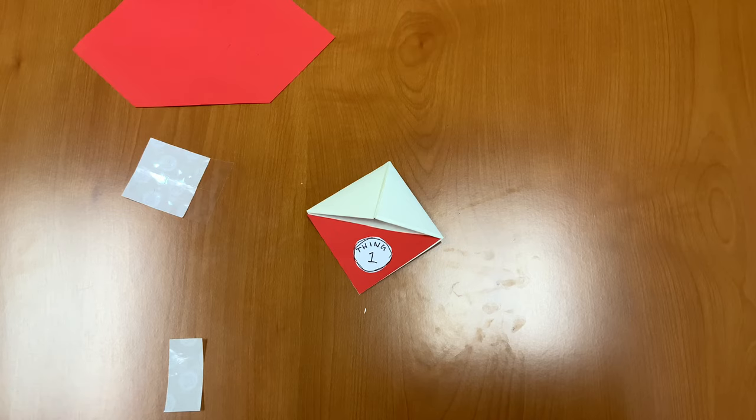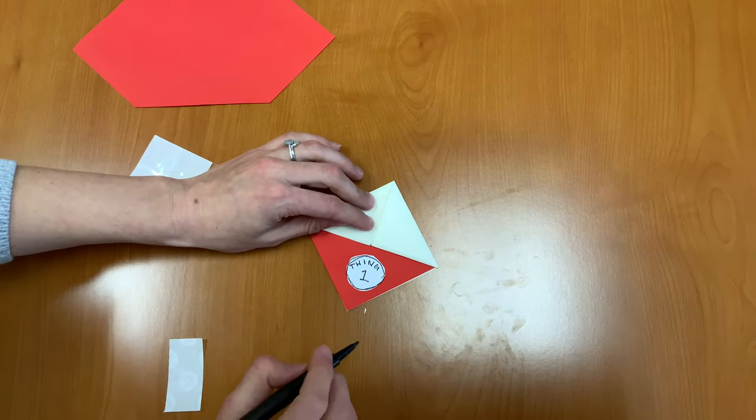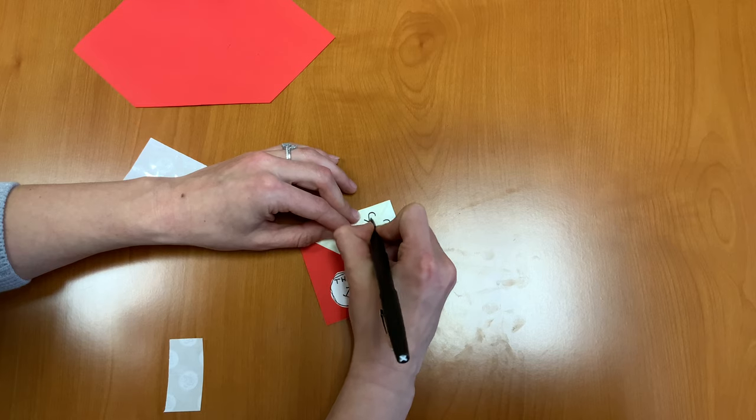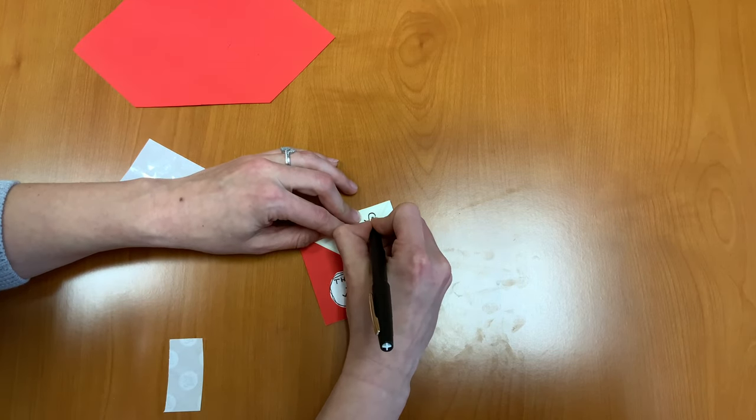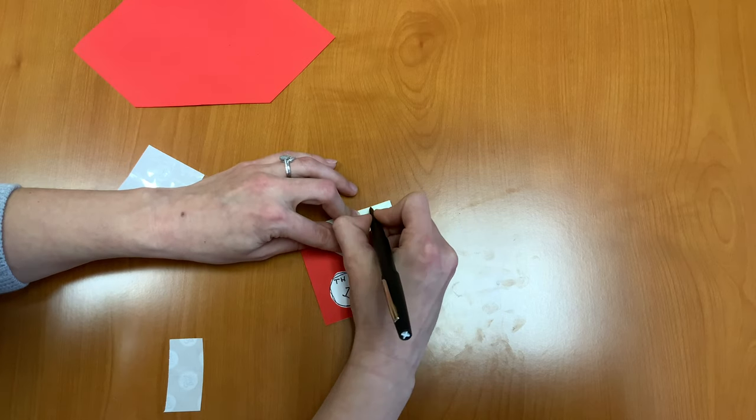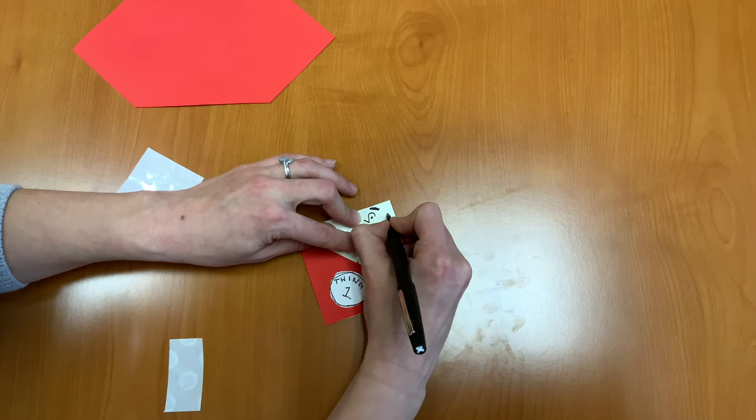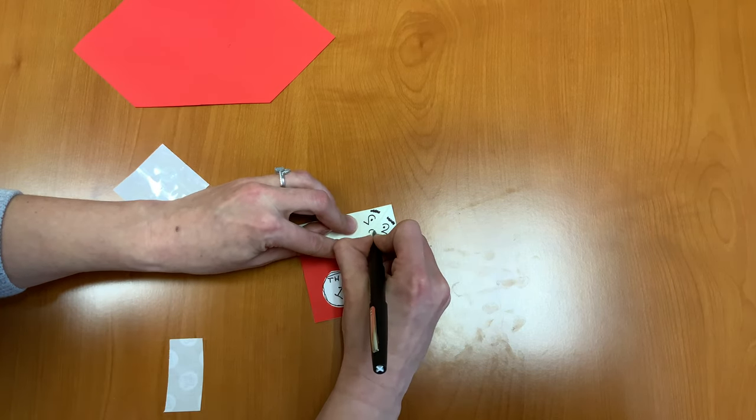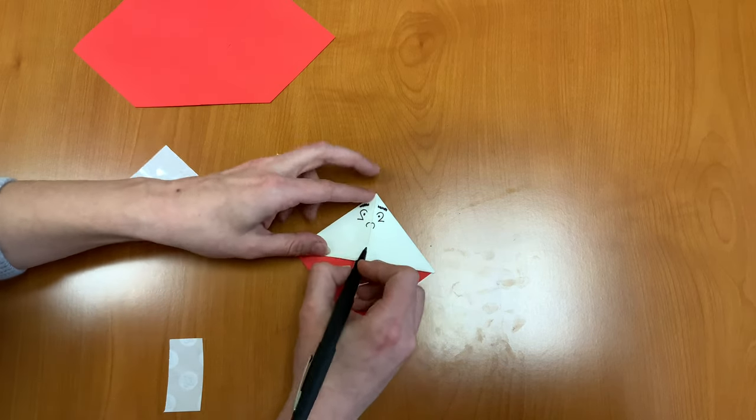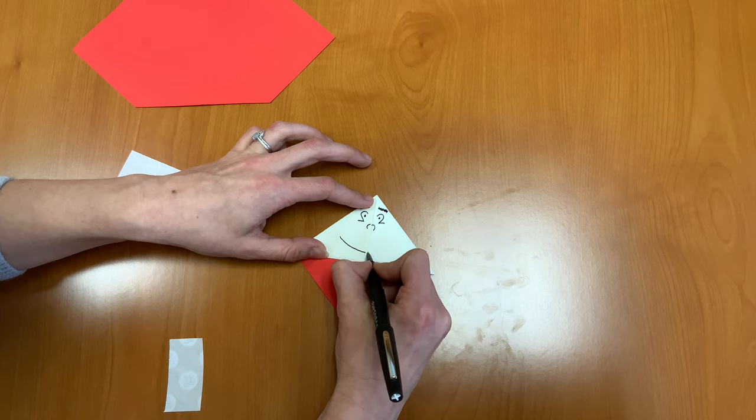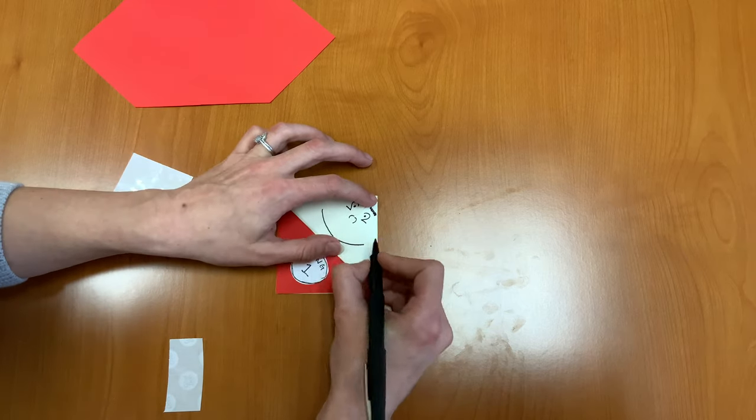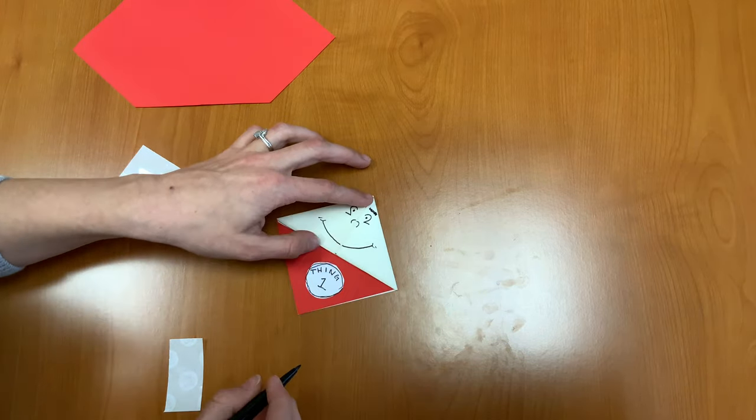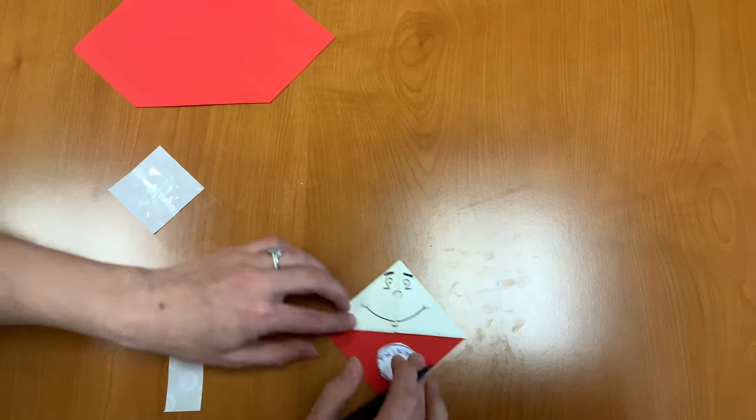Next, we're going to draw our Thing's face. You can draw any sort of face that you want, or you can try to draw a Dr. Seuss style face. I'm going to try to draw a Dr. Seuss style face. It kind of looks like twos. And we have thick eyebrows, but they're really short. And a cute little nose. And we have a big wide mouth.